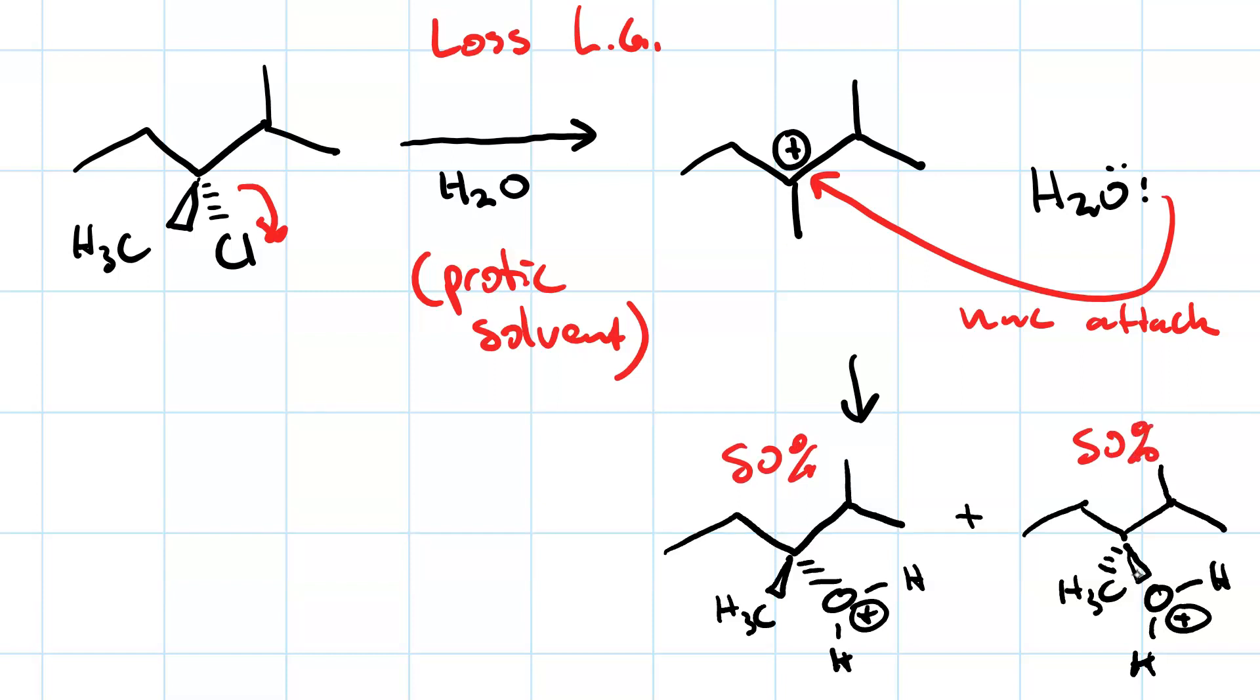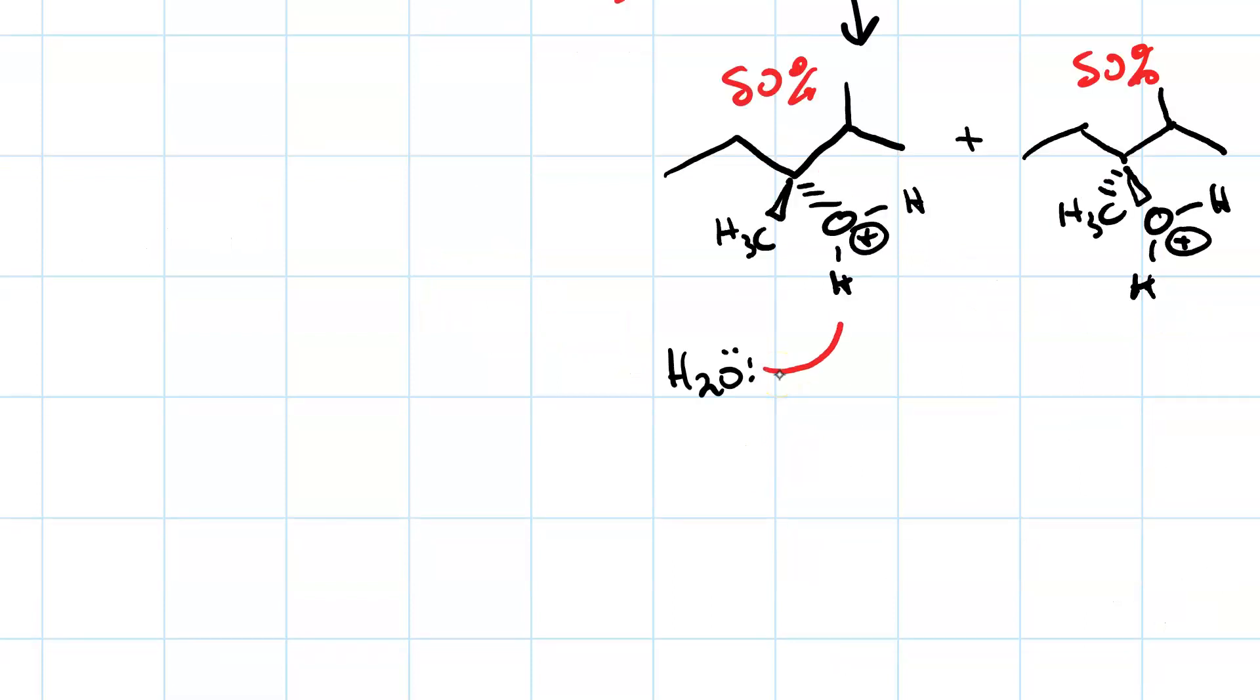Water will then come along and deprotonate it to make the alcohol. Here's water taking one of the protons from the oxonium, and that pair of electrons turns into a lone pair. Now we get the alcohol.